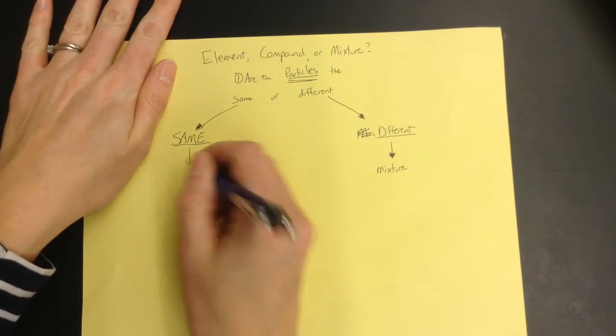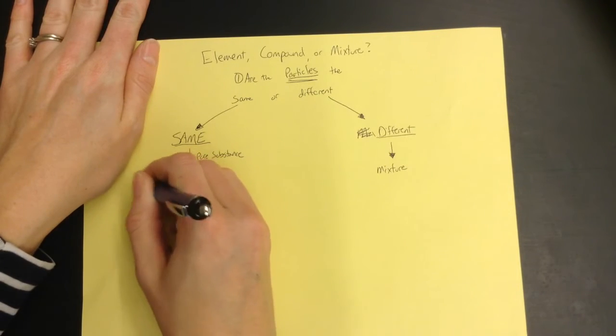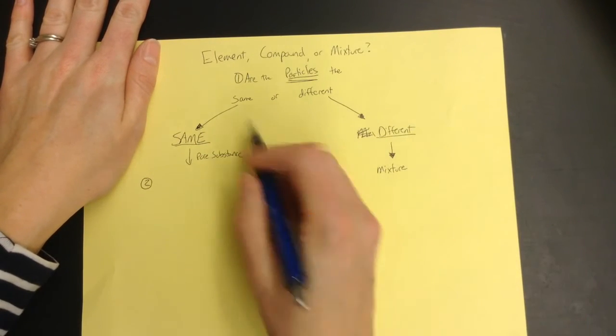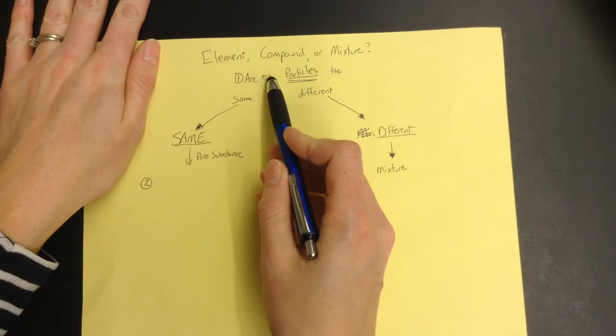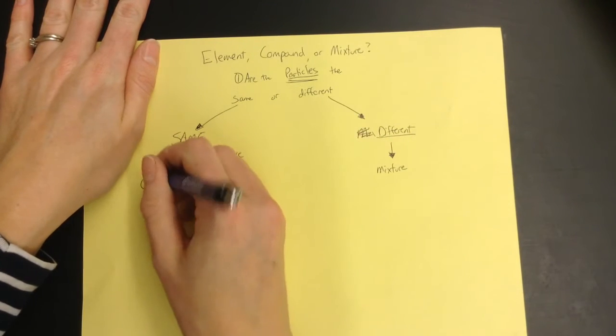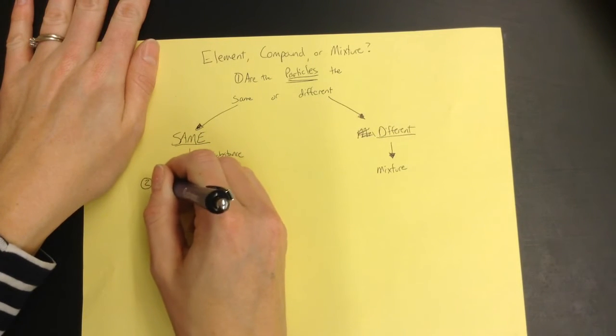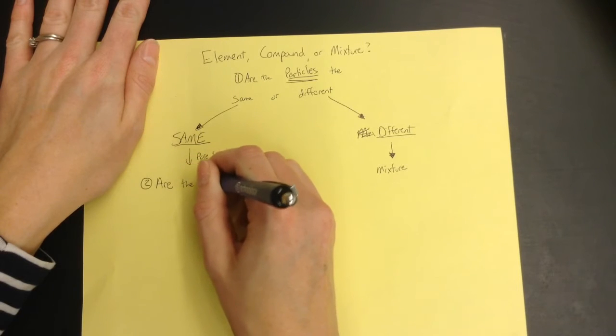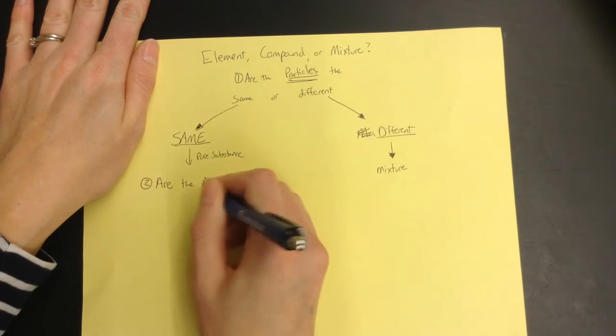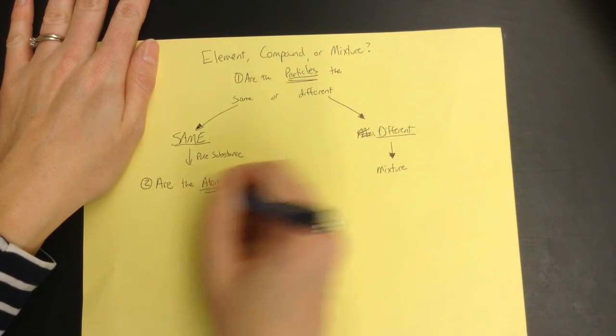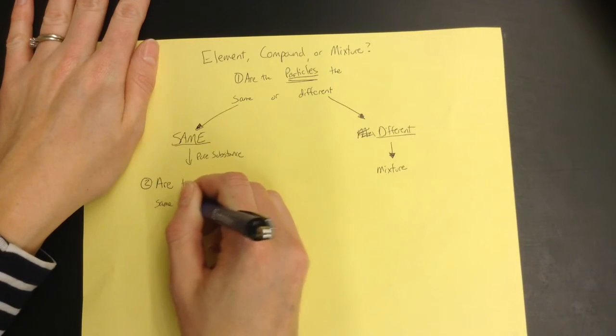All right, so pure substance, we've got to ask ourselves a second question because it doesn't tell us if it's an element or a compound, we only know it's not a mixture. So we need to ask ourselves question two: are the atoms the same or different?